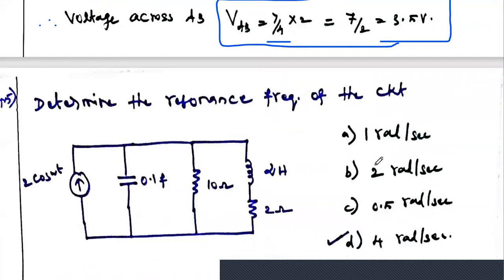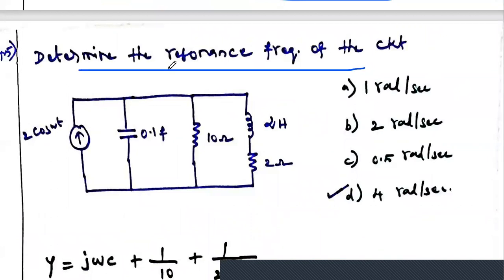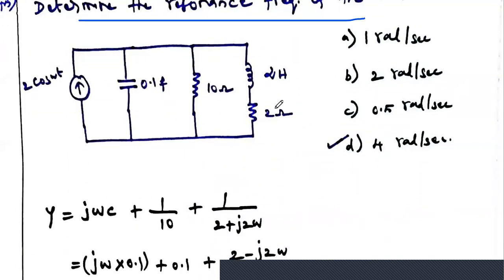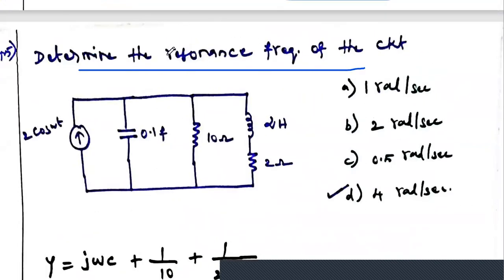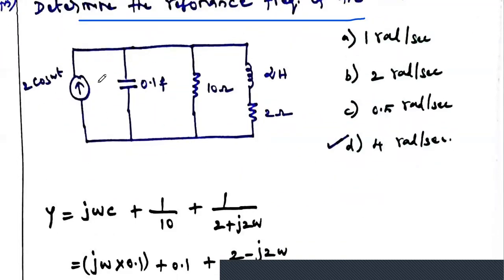The next question: determine the resonance frequency of the circuit. This is a parallel RLC circuit for which we need to find the resonance frequency. The capacitor, resistor, and inductor are connected — the inductor is connected in series with a small resistance; the inductor has an internal resistance of 2 ohms. At resonance, the reactance of the inductor is cancelled by the reactance of the capacitor, and the entire circuit presents a purely resistive impedance.